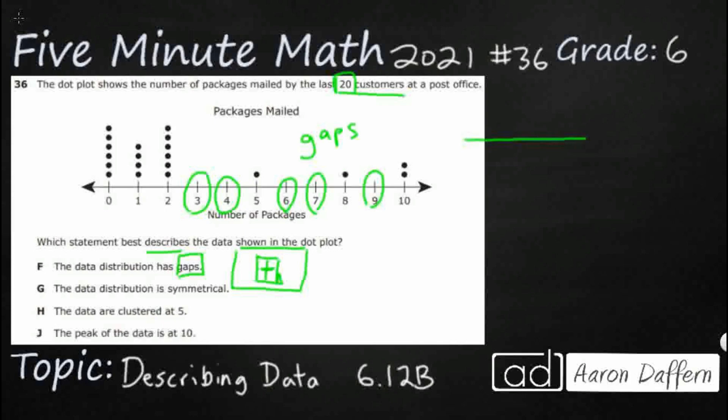If we wanted something that had no gaps, right, then every single piece of data would be filled in every single line. We would have something that looks like this. This is no gaps. If we were to go from 0 to 10, or in this case this was like 1 to 4, this would have no gaps. So F right away, that might be our answer. Let's look at the other ones.